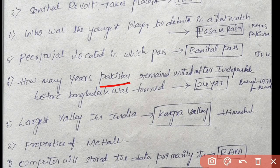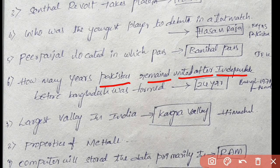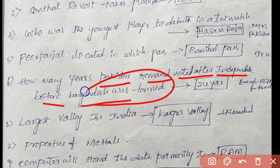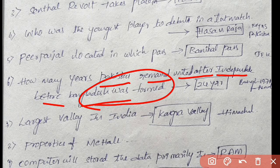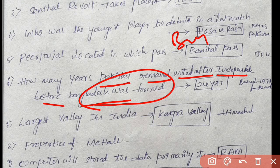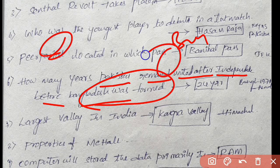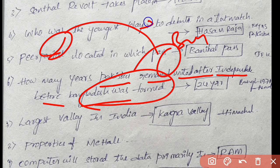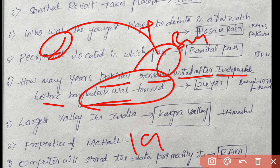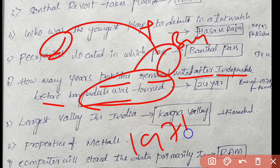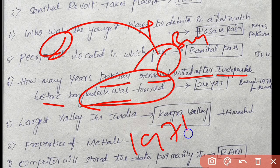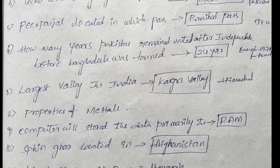How many years Pakistan remained united after independence before Bangladesh was formed? India and Pakistan divided, then Bangladesh. After independence, Pakistan had two sides, but in 1971 Bangladesh became independent. So Pakistan and Bangladesh together: 24 years.